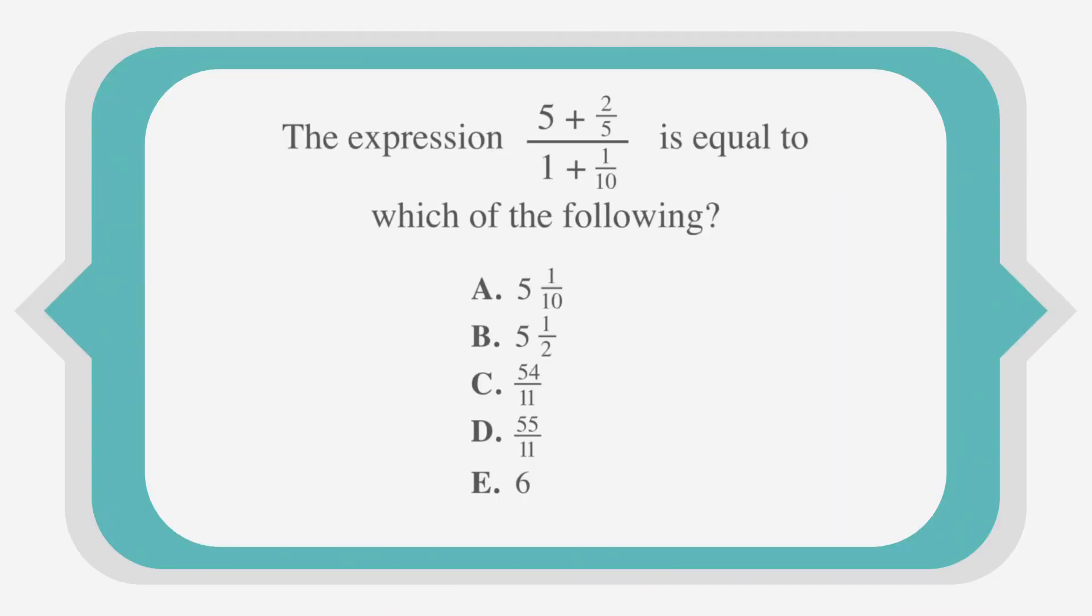Let's look at an example. The expression 5 plus 2 fifths over 1 plus 1 tenth is equal to which of the following? Our answer choices are a, 5 and 1 tenth, b, 5 and 1 half, c, 54 over 11, d, 55 over 11, or e, 6.